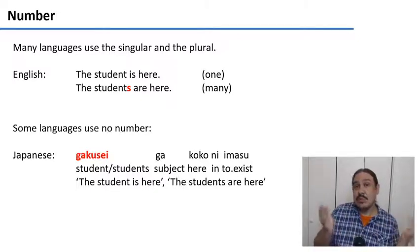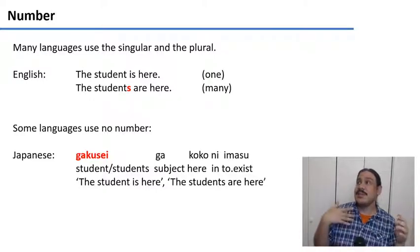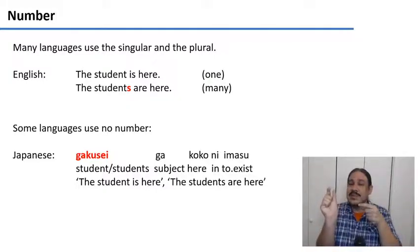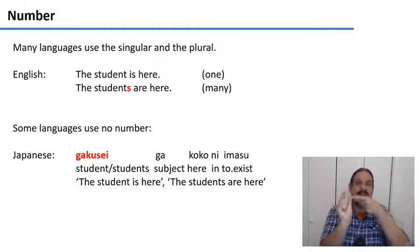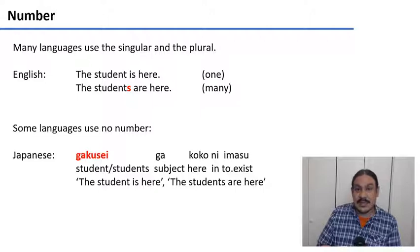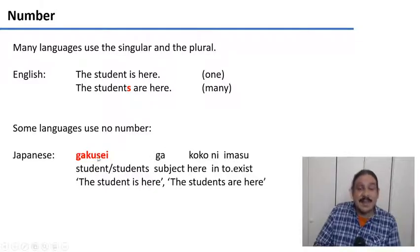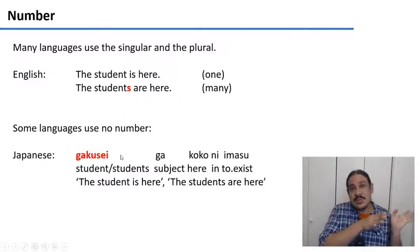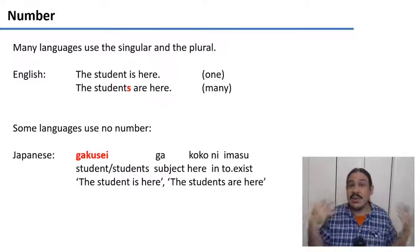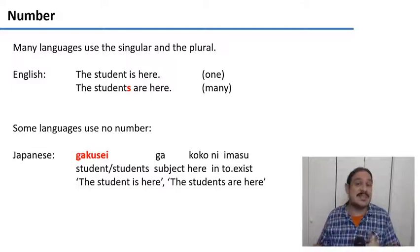In some languages, there's no number marking. Japanese has some way to mark plurality, but there's no unified morpheme that tells you there are many of something. For example, in the sentence 'Gakusei ga koko ni imasu,' the word Gakusei can mean one student or many students depending on context. So this sentence can mean 'the student is here' but also 'the students are here.'